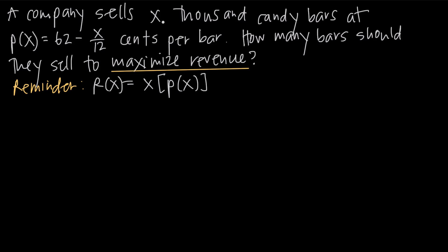We've already been told that we're selling x thousand candy bars, so we're just going to use x for the number that we're selling. We've been given a function for P of x, so we're going to plug that into our revenue function. Revenue of x — the amount of revenue we make when we sell x thousand candy bars — is going to be equal to x thousand candy bars multiplied by the price function 62 minus x over 12.